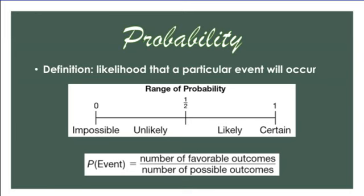We can show the probability using these ranges: impossible, unlikely, likely, certain. And in the middle here, this would be as certain as not, or 50-50.